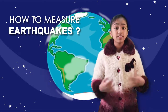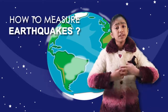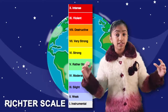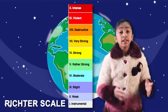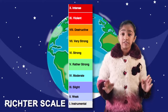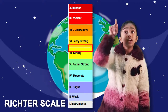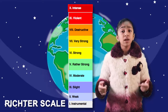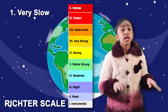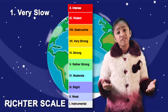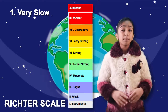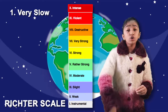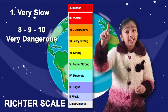Now let us find out how to measure earthquakes. The measurement scale used is called the Richter scale. In this scale, numbers go from 1 to 10. If an earthquake measures 1, it was a very slow one. Most of the time we can feel these earthquakes, but ones that go all the way up to 9 or 10 are the most dangerous.